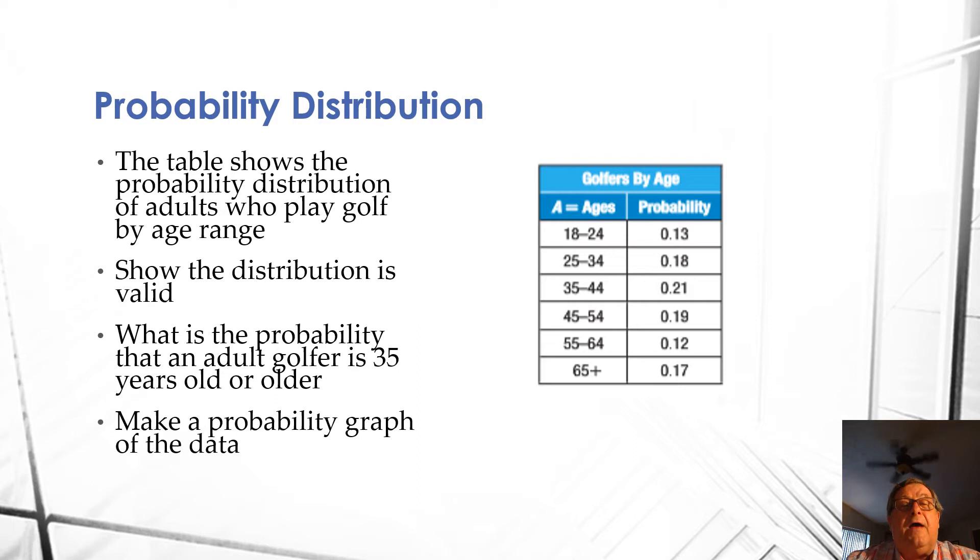So let's see what we have here. The table shows the probability distribution of adults who play golf by age range. First, it says show the distribution is valid. So what we want to do is we're going to add up all of these probabilities right here and determine does that equal 1.